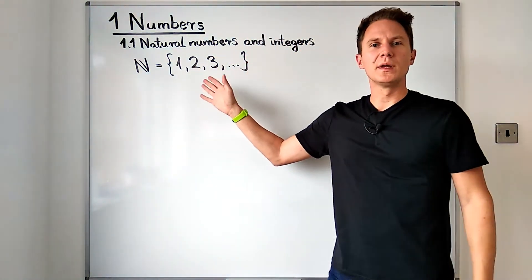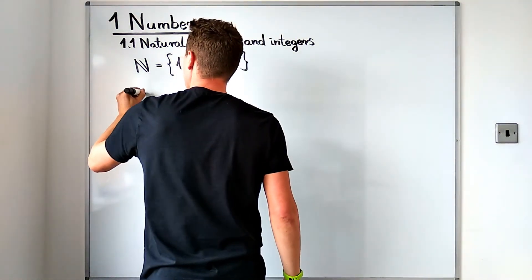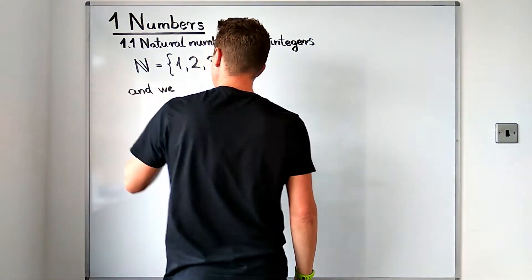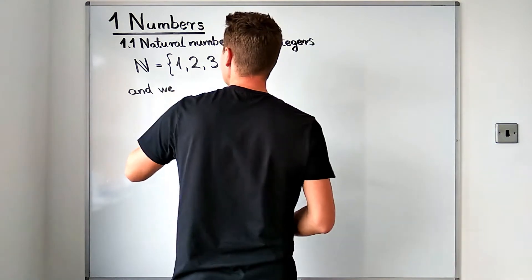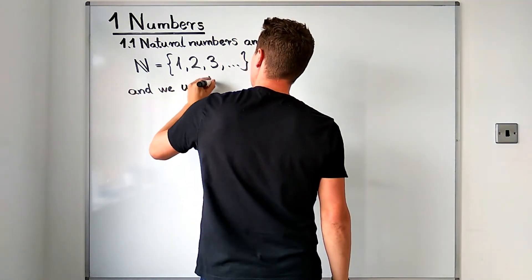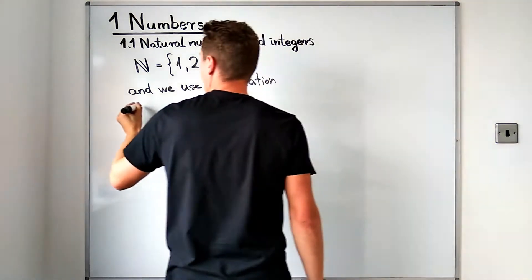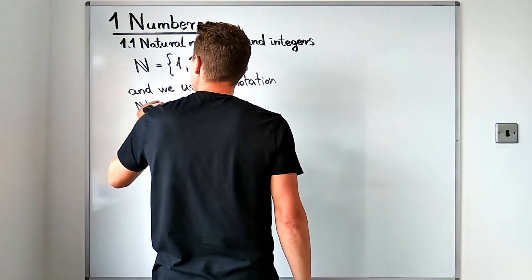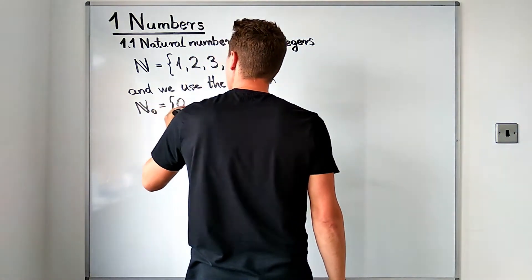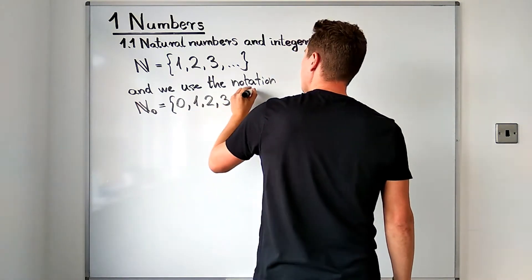Some people consider 0 to be a natural number, well not us. What we'll do instead if we want to have a set with also 0 in it as well as the natural numbers, we will use the notation N sub 0 for such a set which contains 0 as well as all of the natural numbers 1, 2, 3 and so on.